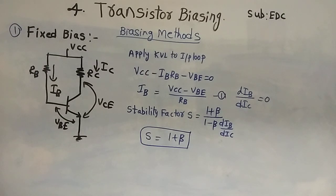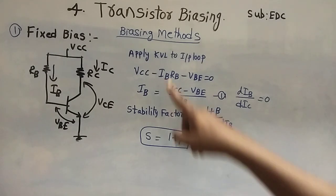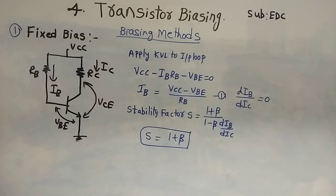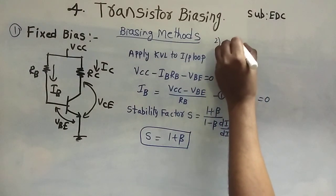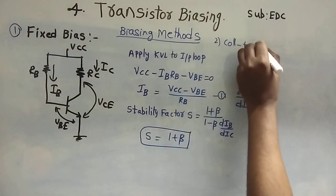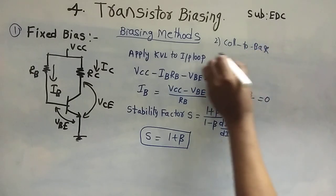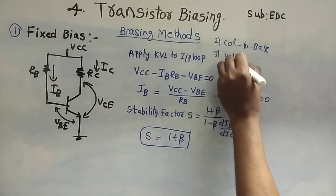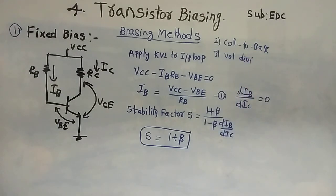Hi everyone, today we will discuss biasing methods, another important topic in the EDC subject from the examination point of view. We have three different biasing methods: first is fixed bias, second is collector to base bias, and third is voltage divider bias. These are the three most important biasing methods.